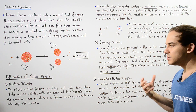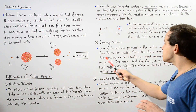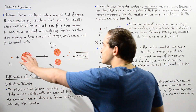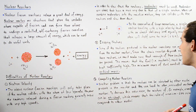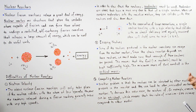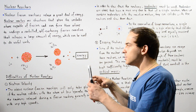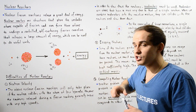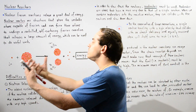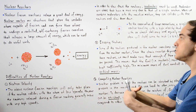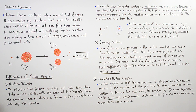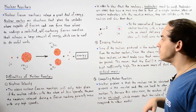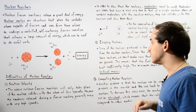Problem number two involves escaping neutrons. Some of the neutrons produced as a result of the nuclear fission reaction can essentially escape from the nuclear reactor. We actually need these neutrons for the chain reaction and fission reaction to continue, which means we somehow have to fix this problem of escaping neutrons.